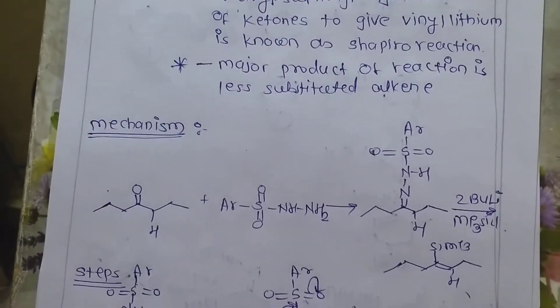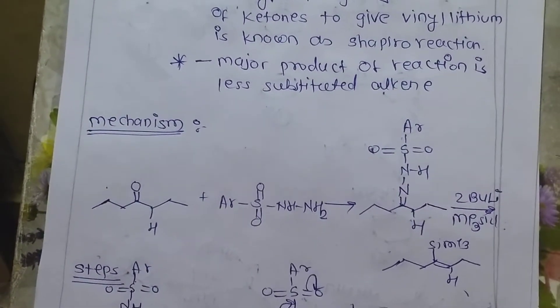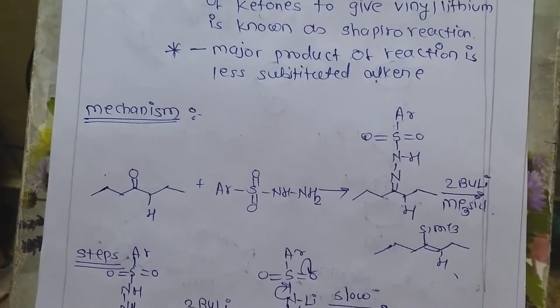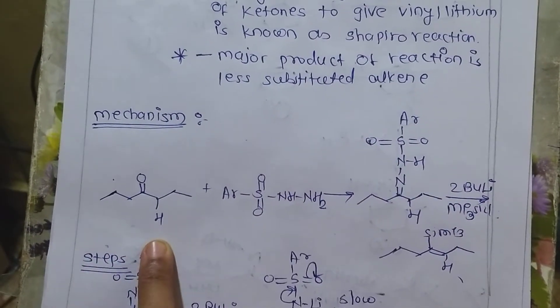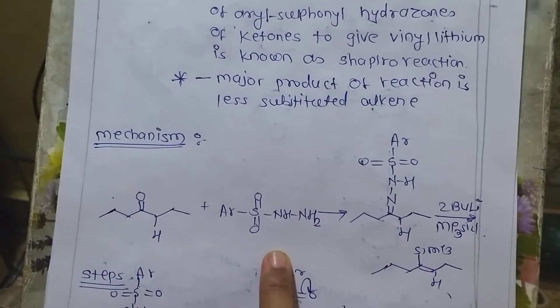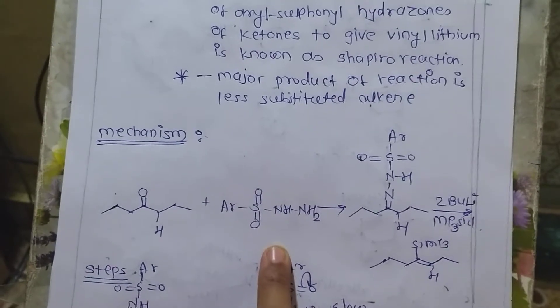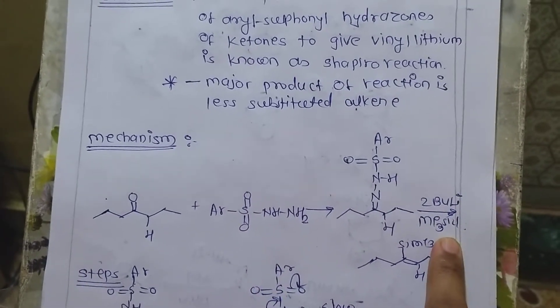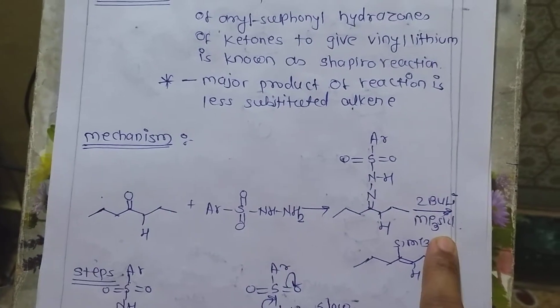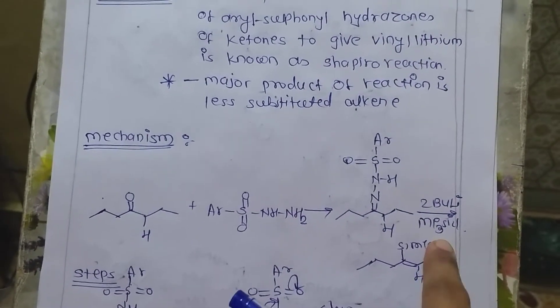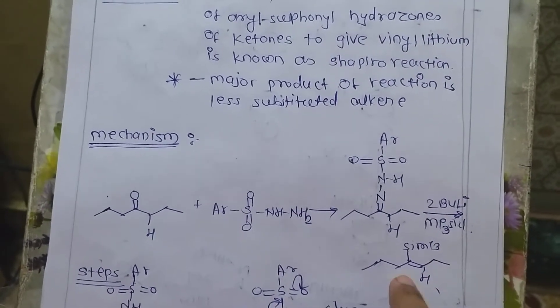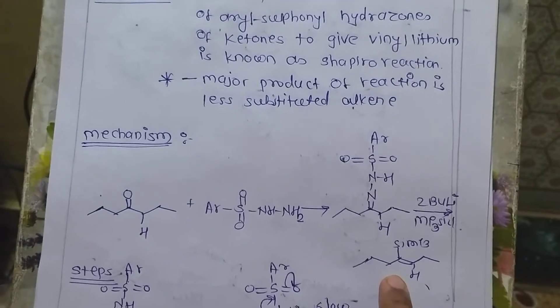If we talk about this mechanism, now look at this. This is one of ketone and this is aryl sulfonyl hydrazones. It will react with two equivalents of butyllithium followed by trimethylsilyl chloride to give less substituted alkene.